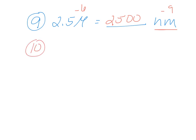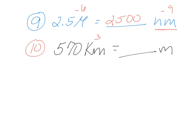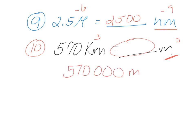Number ten: Mrs. Schertz drove 570 kilometers from Santa Clarita to Sacramento. How many meters was this? Going from kilometers to meters: kilometers is 10 to the third, and meter is a standard unit, so the difference is three. Meters is smaller, so my number has to be bigger — moving it three spots. The answer is 570,000 meters.